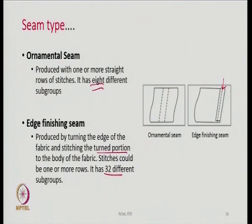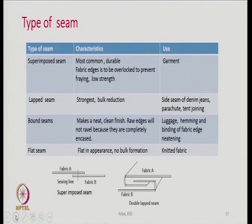Stitch and seam go together. For stitching we need thread — different types of stitching are there, we can use different types of thread, and then we can have different types of seams. That is the way we bring the two fabrics next to each other and try to sew them. One has to choose the right kind of seam for a specific end use.